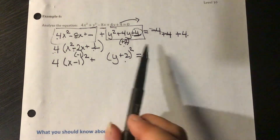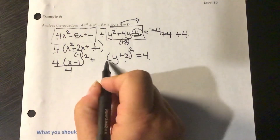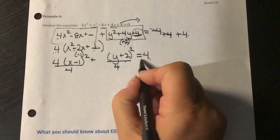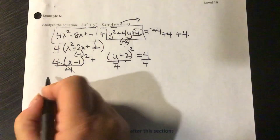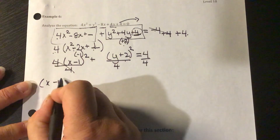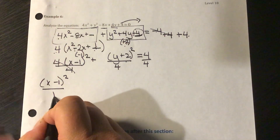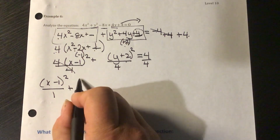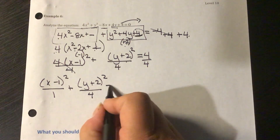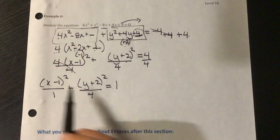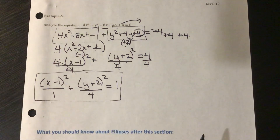For an ellipse the equation needs to equal 1, so I divide all parts by 4. This gives (x minus 1) squared over 1 plus (y plus 2) squared over 4 equals 1. This is the standard form equation I'll work from.